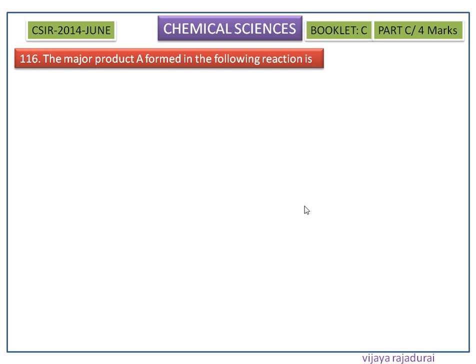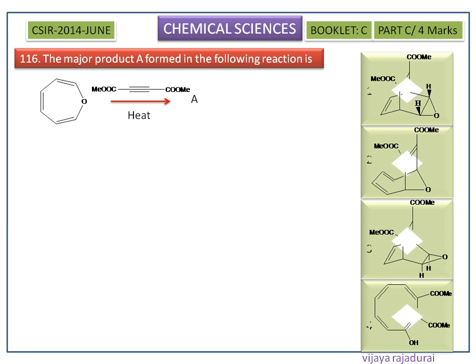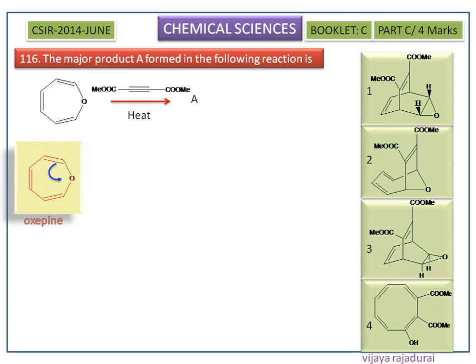The major product A formed in the following reaction is shown in the options. Here oxepine is a valence tautomer of benzene oxide. It readily tautomerizes to give benzene oxide. Here it acts as a diene.